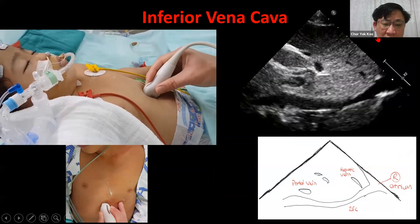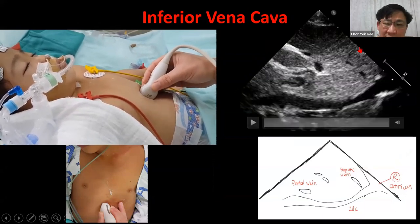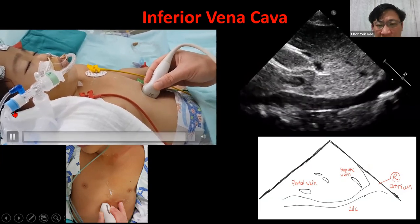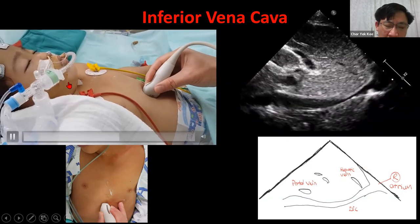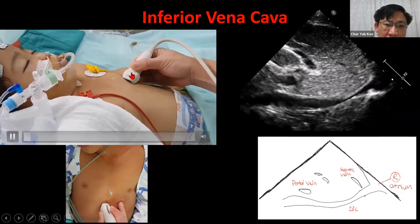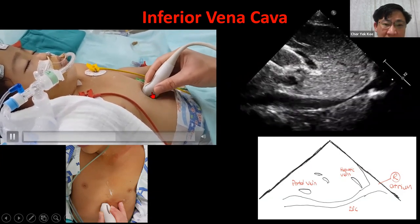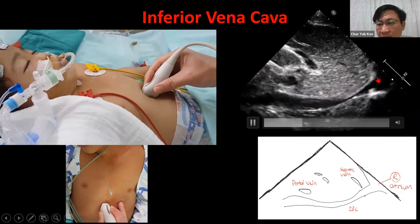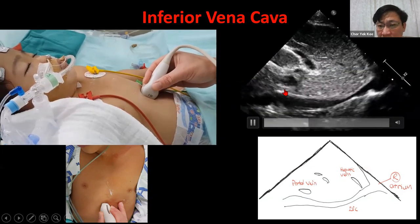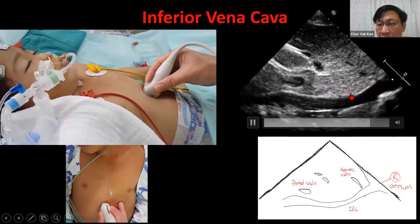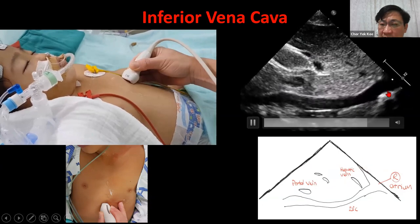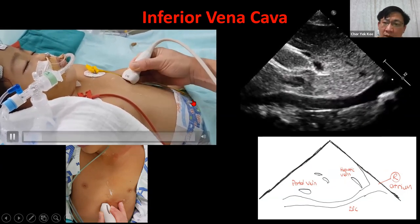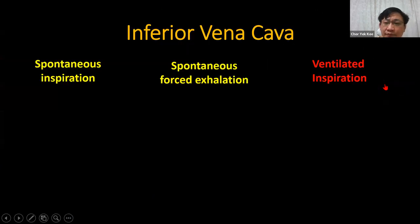To get the IVC view, don't look at the ultrasound monitor — just look at the patient and move your probe to the midline. Then subcostally tilt the probe slightly and you will see this image: the liver, the IVC, and the hepatic vein. Always put it at the midline first, then look at the screen to find the IVC.